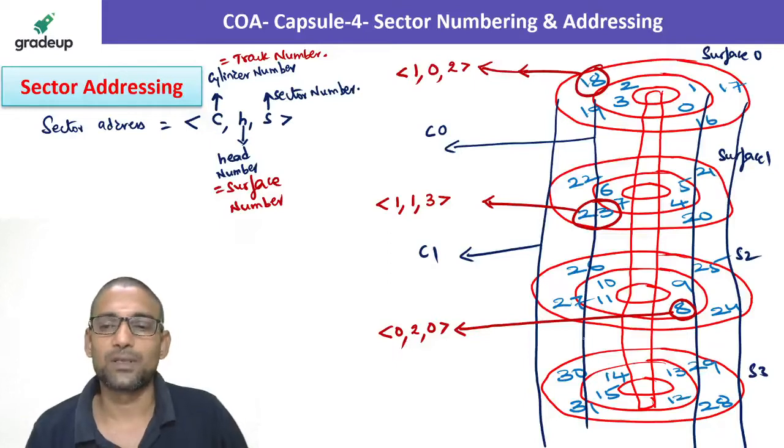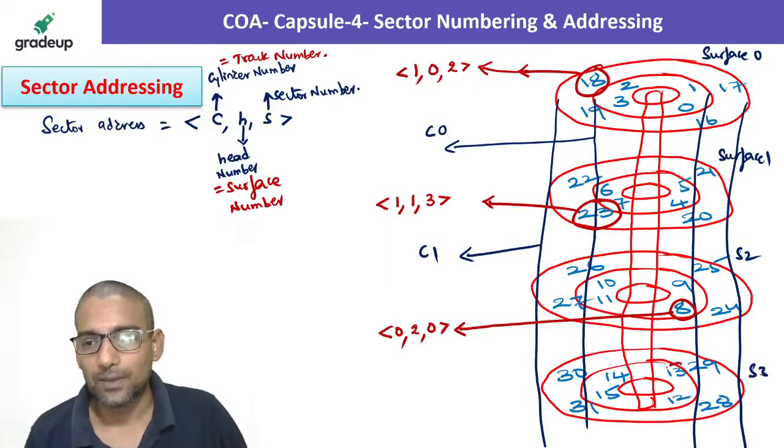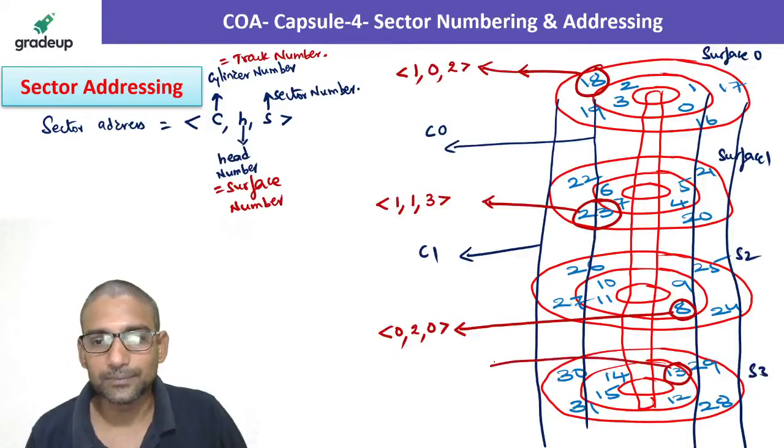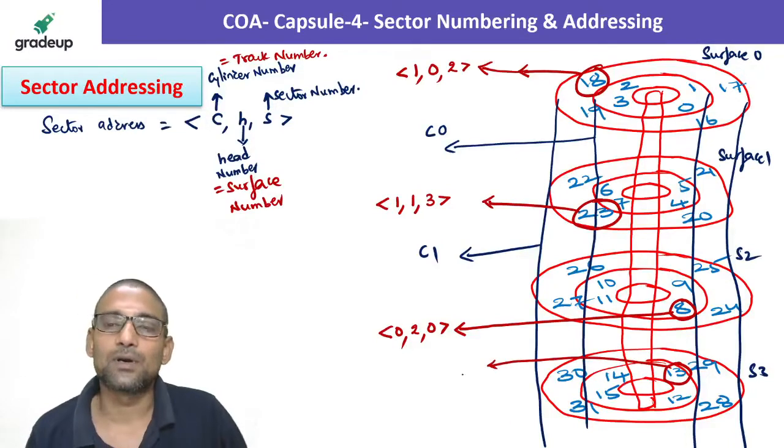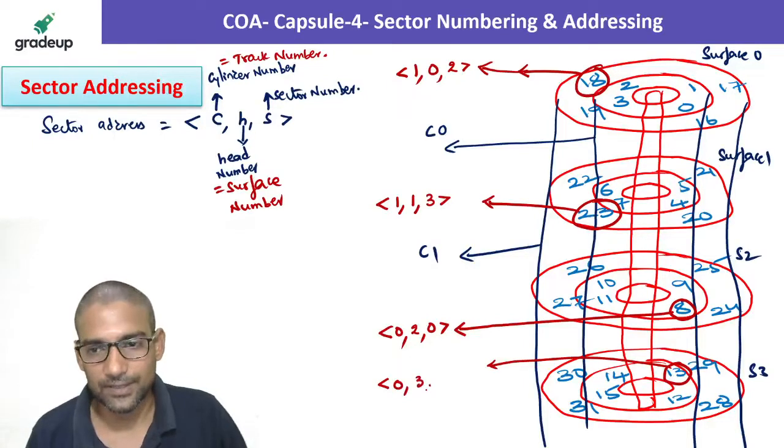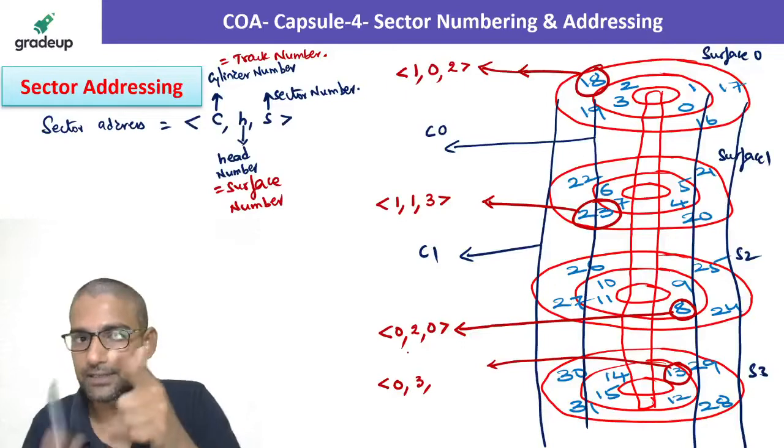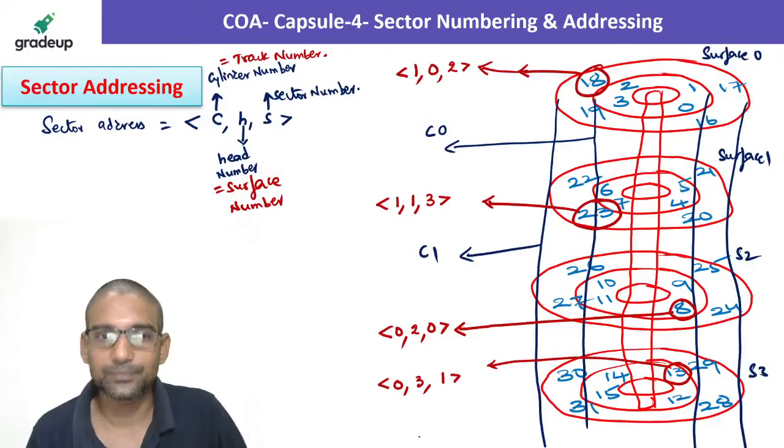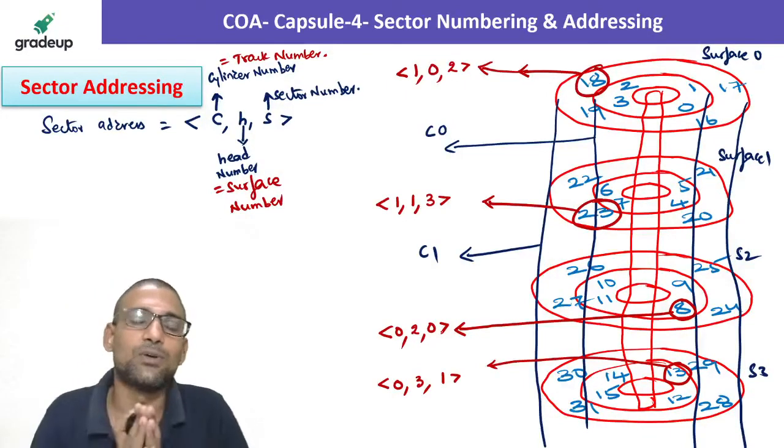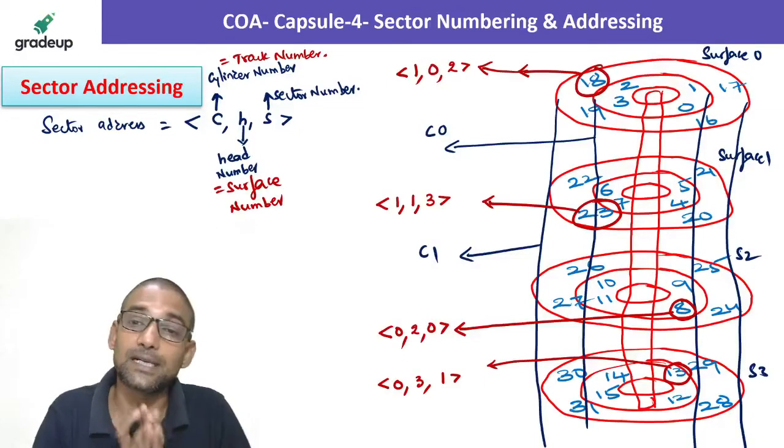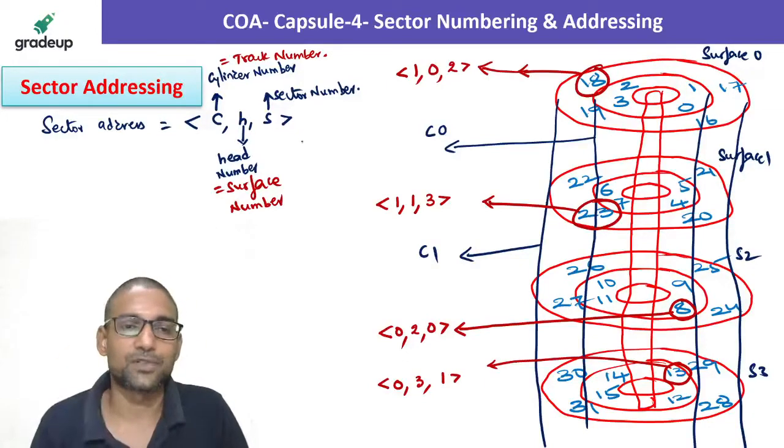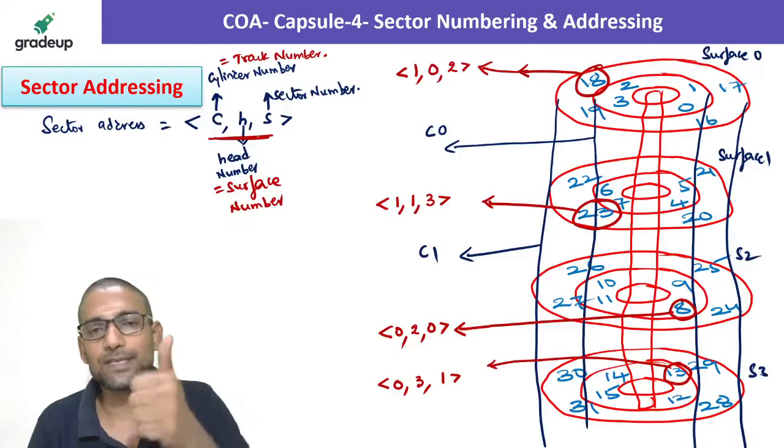Suppose, I would like to identify 13. How the address would be? This is on cylinder 0, surface 3. On that cylinder, on that surface, it is sector number 1. This is how we will give the sector address. Sector address is always composition of CHS.